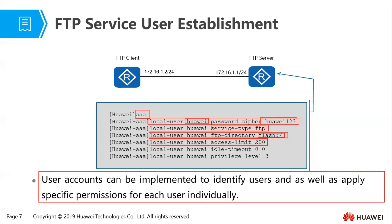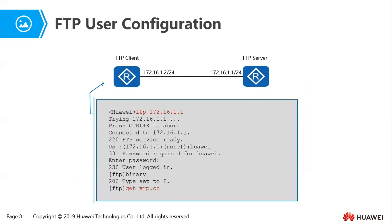The idle timeout is configured in minutes and seconds for security purposes: if the network admin leaves their connection open, after how long of inactivity should they be logged out? Specifying 00 means unlimited — the session never times out — which is a security risk. The privilege level for this user is set to level 3, which is a management level allowing most operations. This will be covered further in the AAA topic.